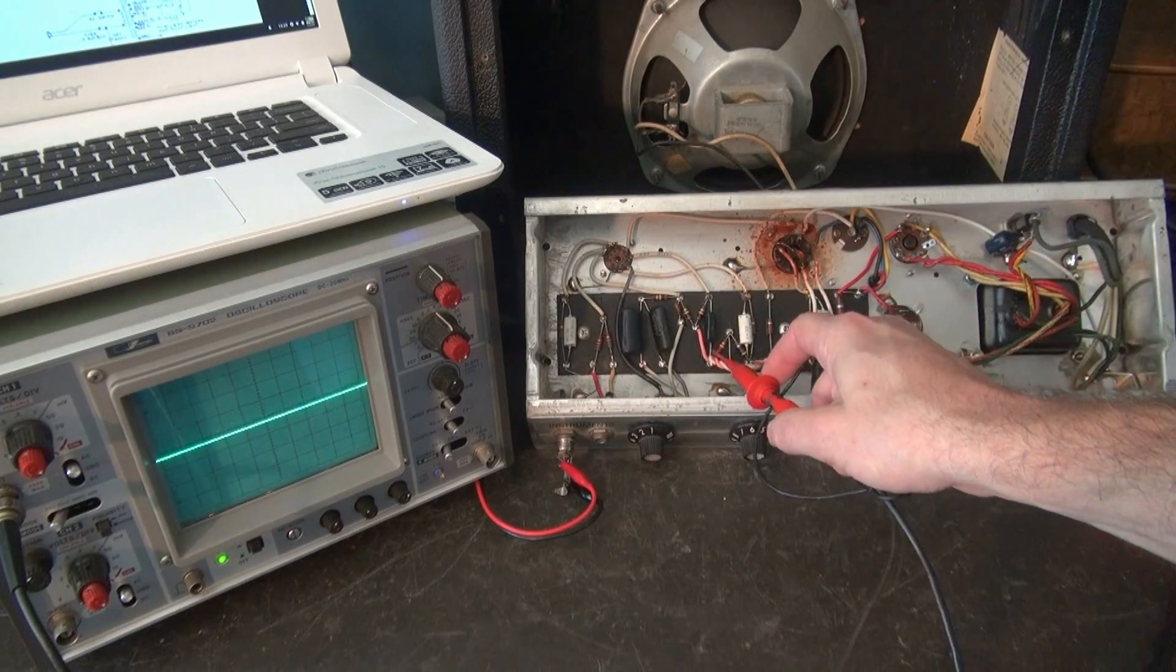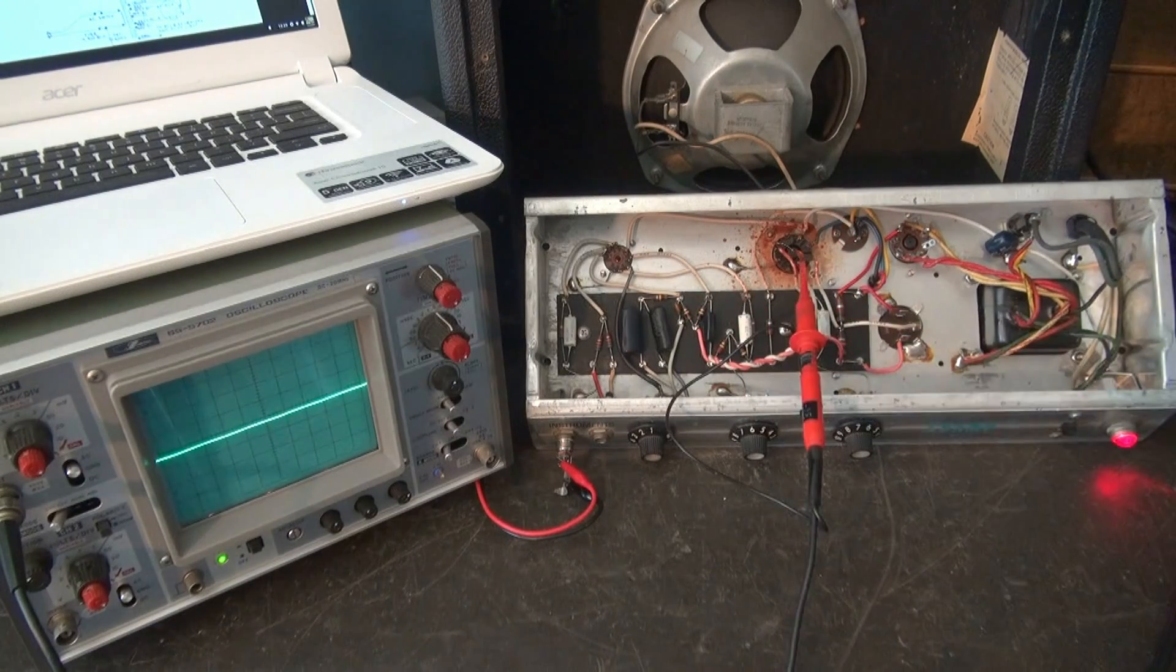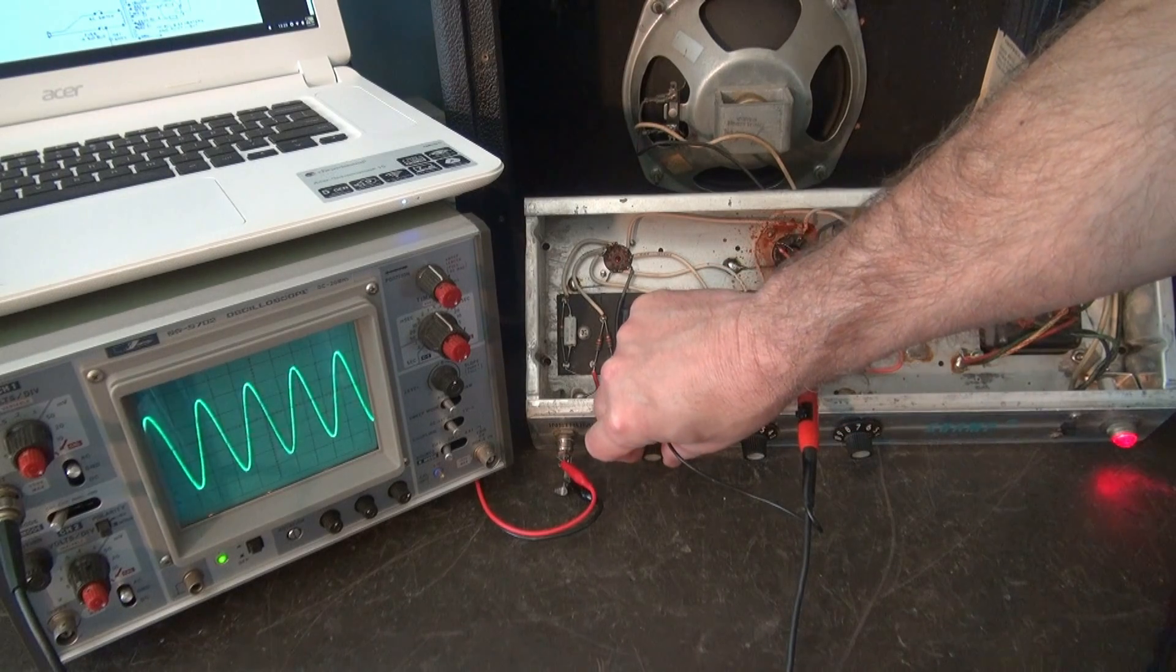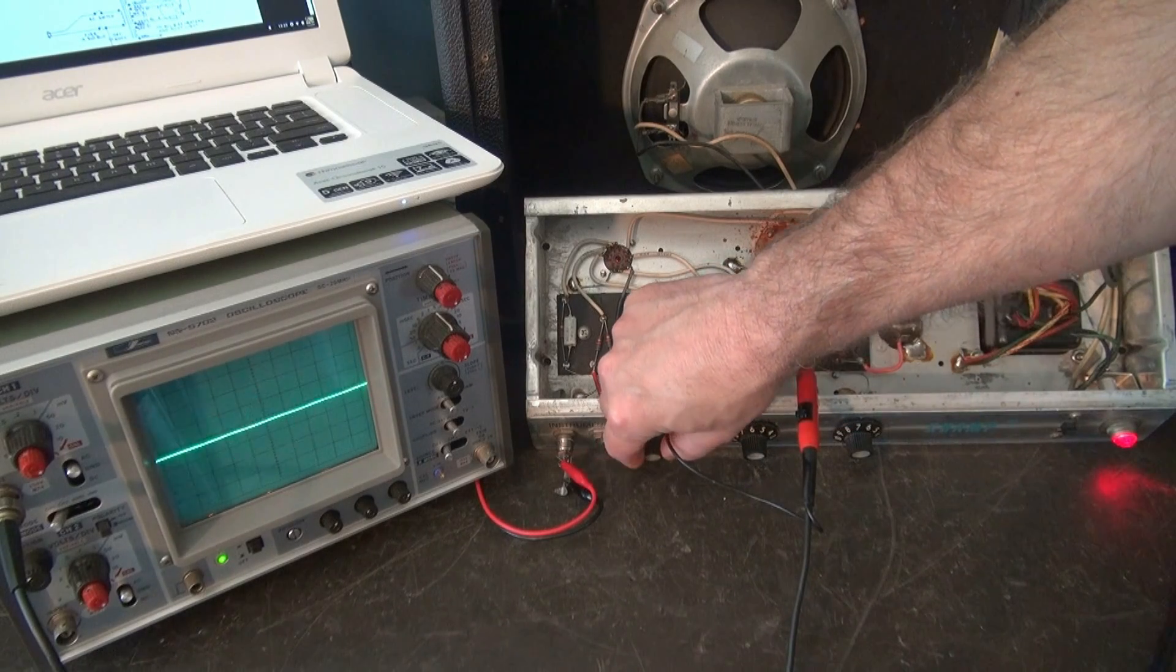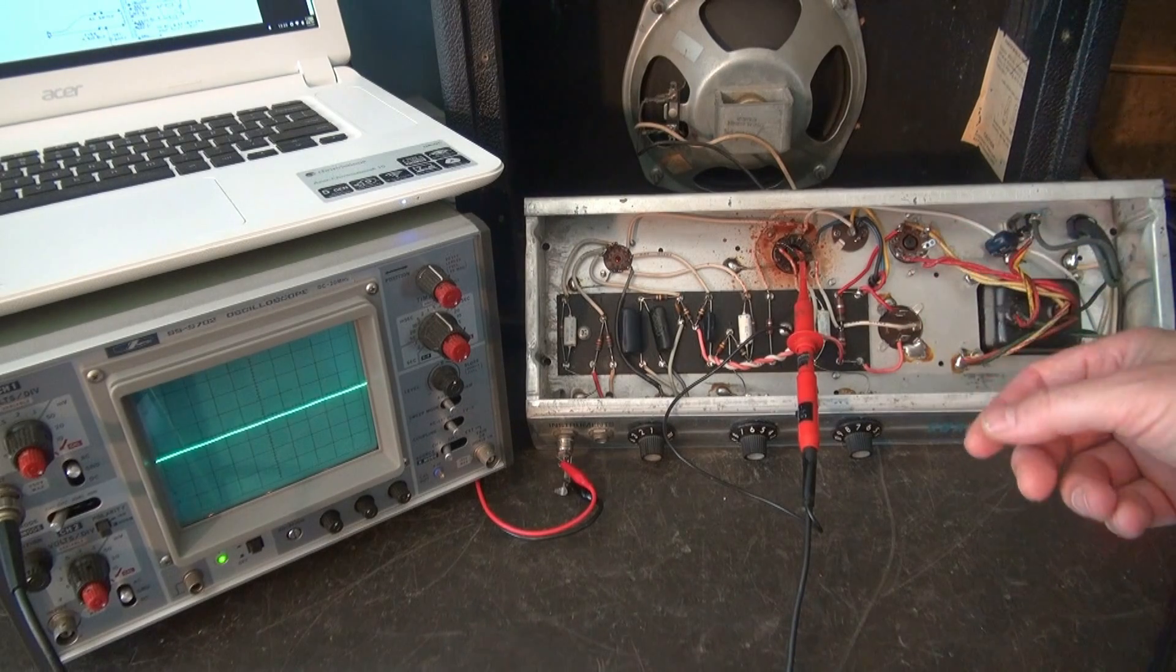Now, let's go right to the grid of the 6V6. So here we are. Pin 5 of the 6V6. There's your signal. It looks great. Remember, I've done nothing to this amp. And it appears to be working excellent so far.